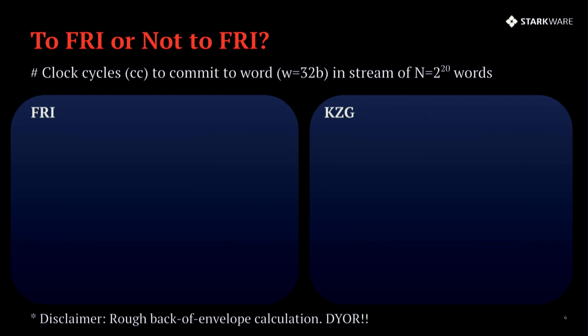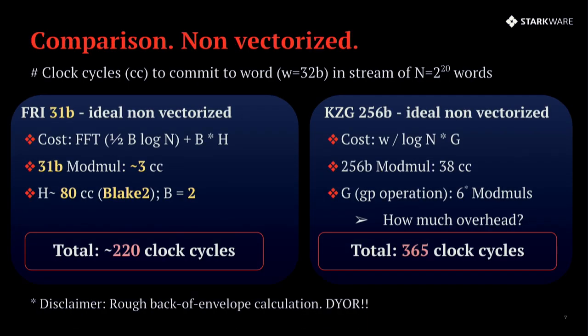Let's compare FRI and KZG. This is based on some comparisons that I already presented in the past, both at Stark at Home and at the Stanford Blockchain Conference. The current status is that if you look at non-vectorized instruction sets, KZG under the most ideal algorithms that we know of today, you're going to have to do roughly a cost of word length, so that's 32 divided by the logarithm of the stream. In our case, it's 20. So 32 divided by 20 number of group operations. Each group operation at best, and you have to do a lot of fancy work to make that work, you need to do six modular multiplications for doing elliptic curve operation. And each one of those roughly costs 38 to 40 clock cycles.